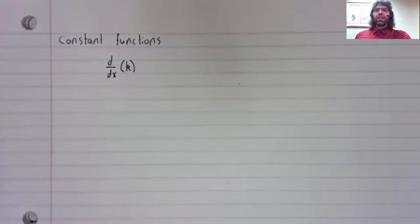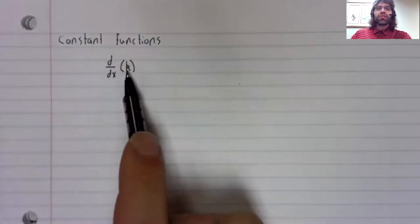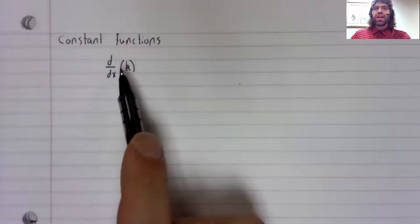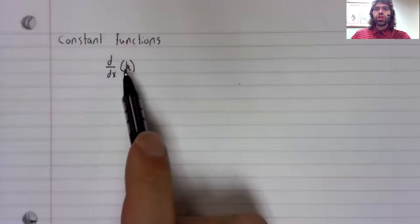The derivative is a rate of change. The derivative at a point tells you how quickly the function is changing at that point. Constant functions are constant. They aren't changing.